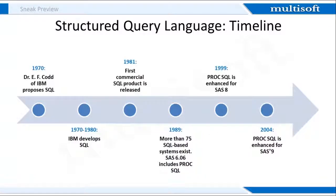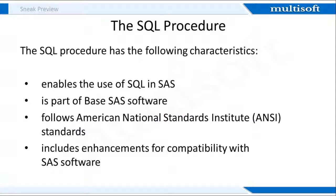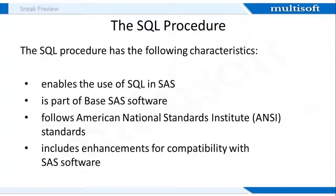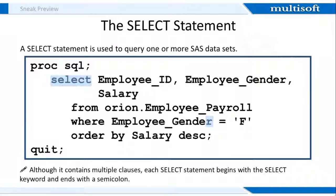The first commercial SQL product was released in 1981. SAS V6.06 contains the SQL language as a proc step. Now SAS uses proc step to update, modify and retrieve query results. It can also create tables, views and indexes. SQL is a part of base SAS software which follows the ANSI standards that improve compatibility within the SAS software. Here we can see the similar kind of syntax we use to write a query in any of the other SQL languages.